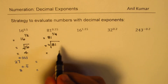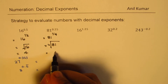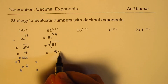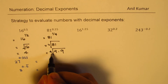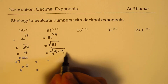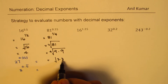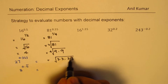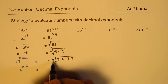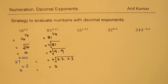Now 81 can be written as 9 times 9. We can further write 9 as 3 times 3, so 81 is 3 times 3 times 3 times 3. That means clearly the fourth root is 3, so we get the answer as 3.